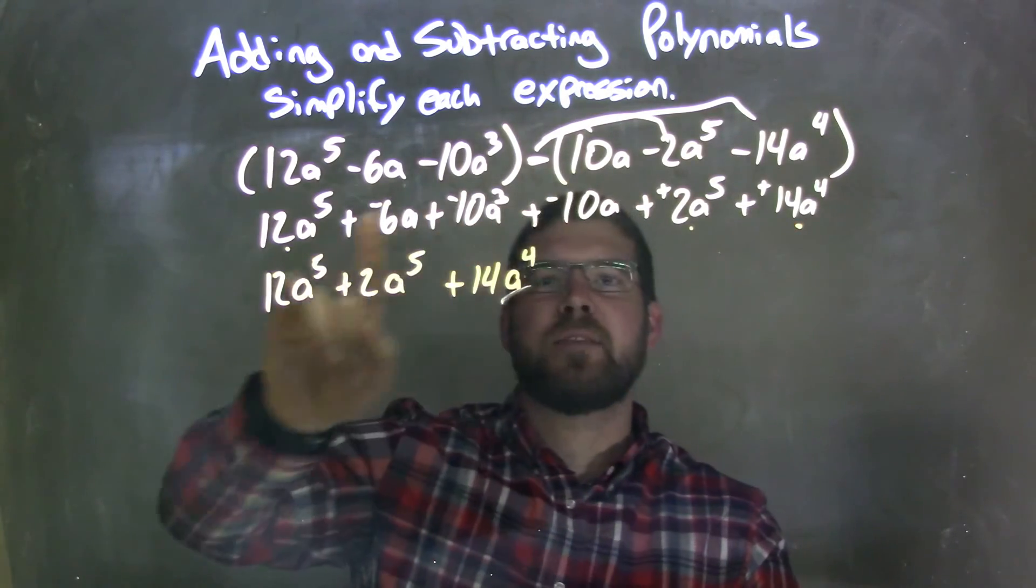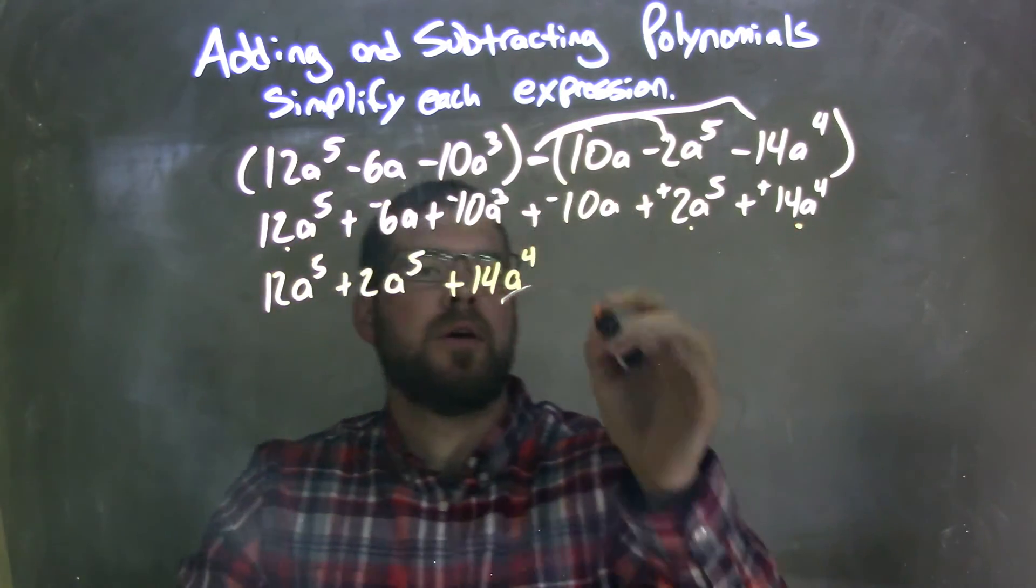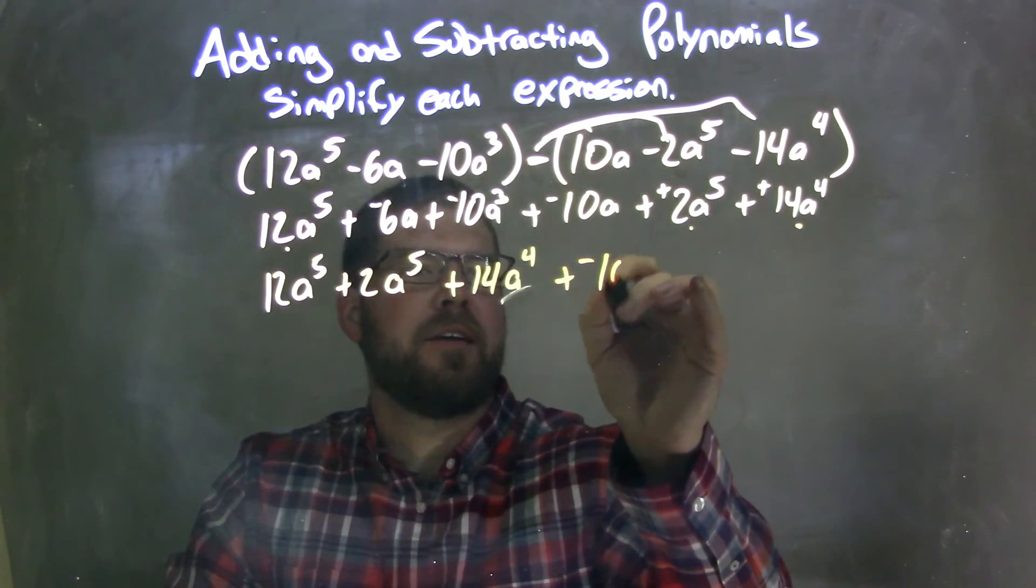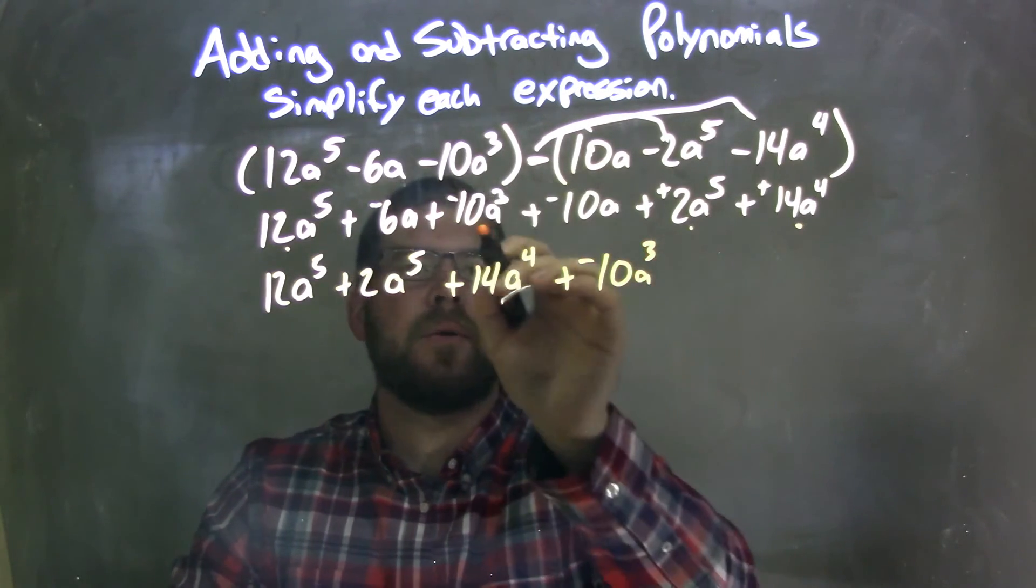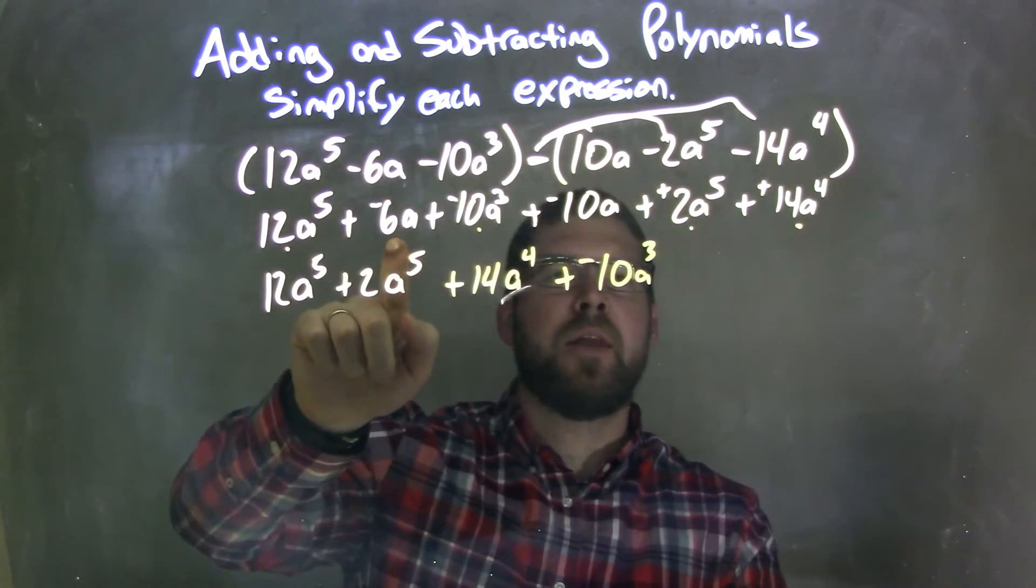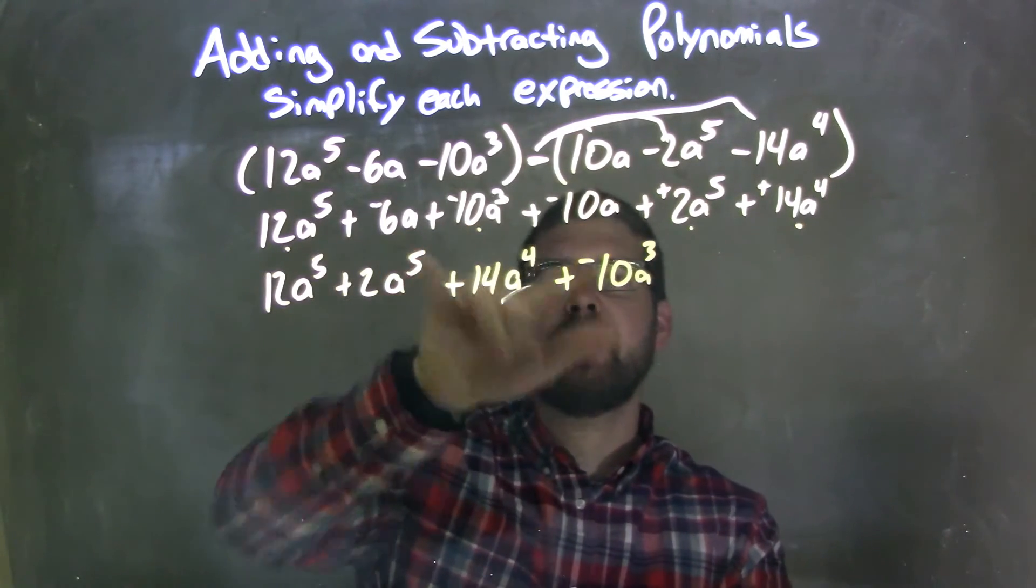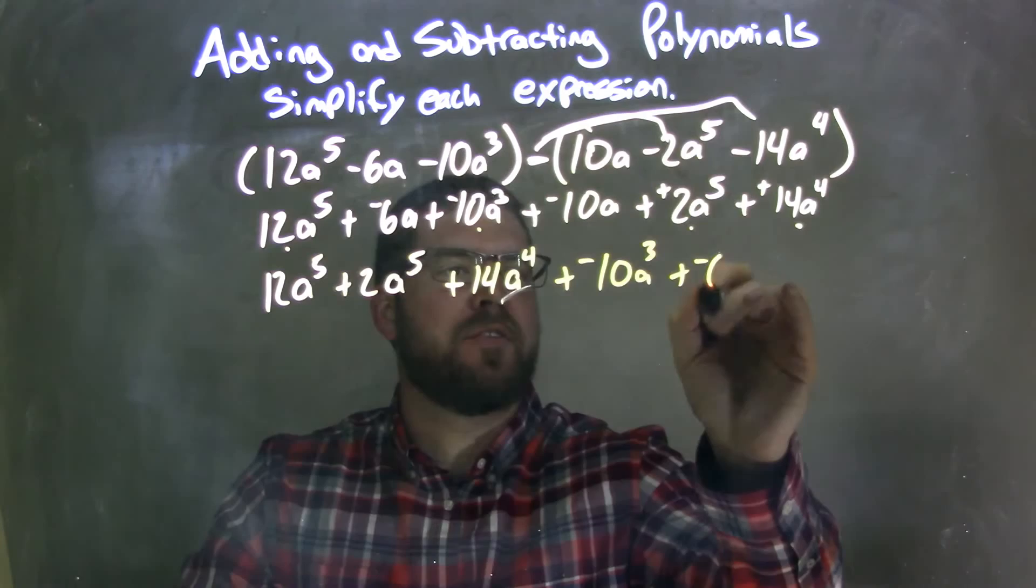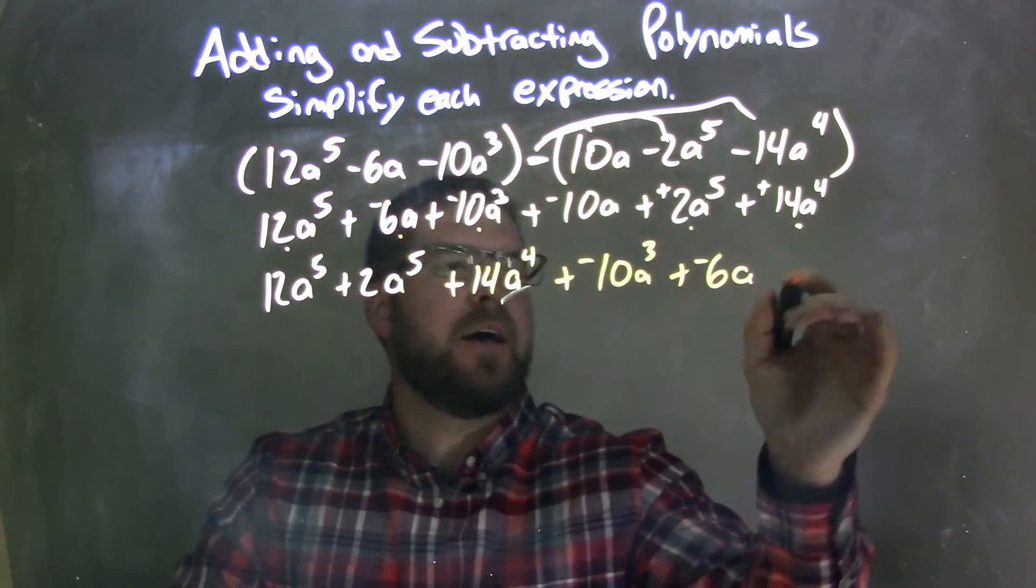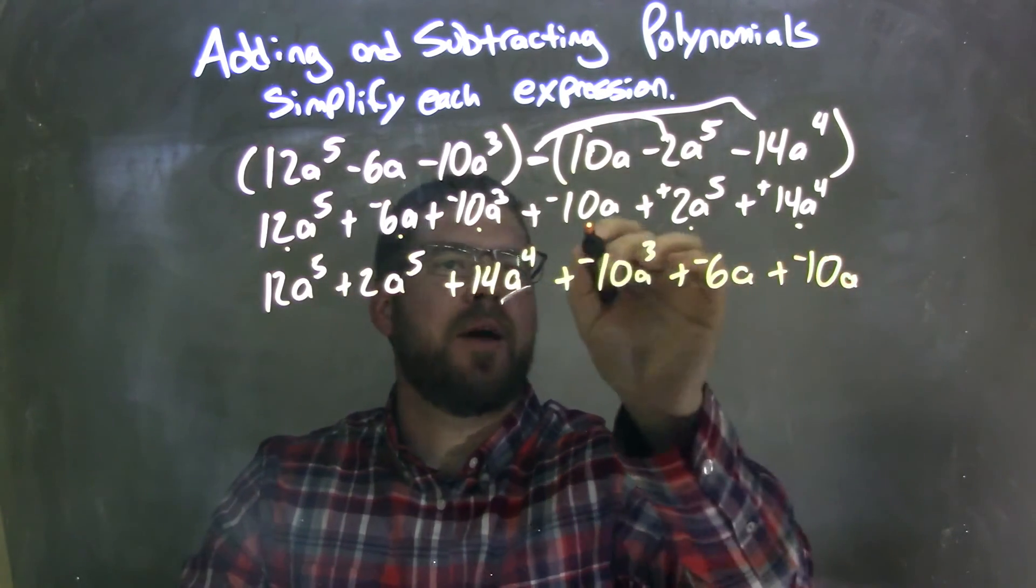Now, I have the 4th power. What's the next highest power? I see to the 3rd, so we have plus a negative 10a to the 3rd power. Fantastic. So now let's bring the next highest ones, I see are just the a's, so we have plus a negative 6a and plus a negative 10a.